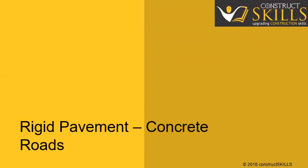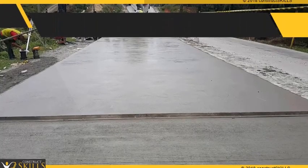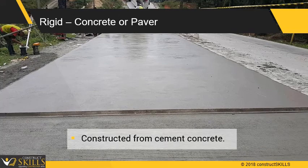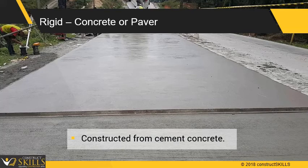Rigid pavements are roads made from concrete. In this type of road, the load is distributed by slab action. It assumes that the road is a thick plate and will remain as it is after bending due to loading and temperature variation. The top layer is made up of reinforced cement concrete (RCC). There is also a plain cement concrete layer, which acts as a leveling course for the RCC layer.